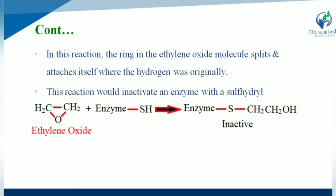The ethylene oxide structure (CH₂OCH₂) contains a ring that splits completely and attaches to the hydrogen molecule. CH₂OCH₂ binds directly with the hydrogen atom, forming CH₂CH₂OH on the other side. This reaction inactivates the enzyme via the sulfhydryl group, producing an enzyme-sulfur-mercury complex with release of two HCl molecules.